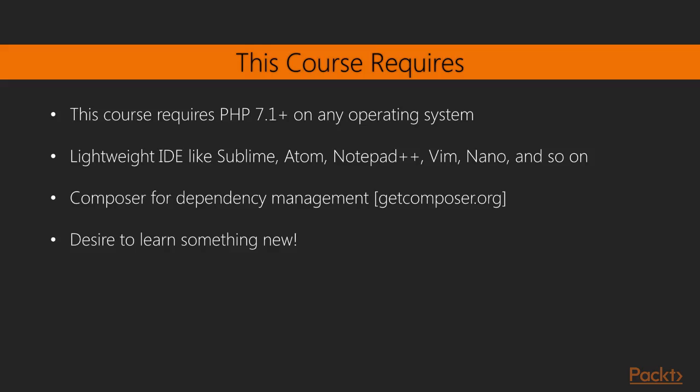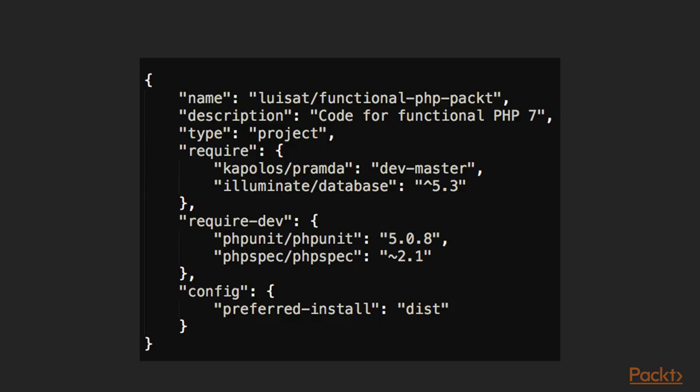The Functional PHP 7 course is very lightweight in terms of installation and setup. The most important requirement is that you have PHP 7.1 installed on any operating system of your choice — it could be Mac, Windows, or Linux. A lightweight IDE would be a good idea like Sublime or Atom, but you could always use PHP Storm if that's what you prefer. Also, Composer for dependency management, as we're going to be incorporating some of the functional libraries in the ecosystem. And most importantly, the desire to learn something new, as we're going to be approaching concepts from a completely new perspective.